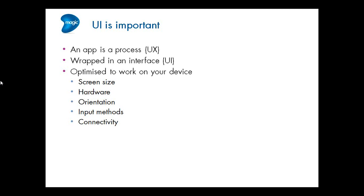This is particularly important with mobile because there are so many different devices. We need to understand how screens need to change depending on screen size, hardware orientation — whether you're holding it in landscape or portrait mode, or with wearable devices — input methods whether you're looking at touch, voice, or stylus, and also what connectivity you have. For example, recently with the new iPhones, iOS apps might need to connect over NFC — the pay-by-touch system.